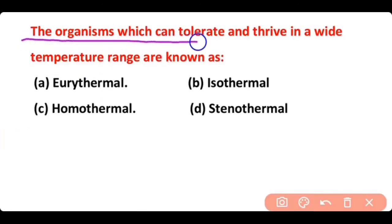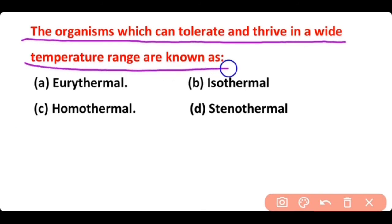The organisms which can tolerate and thrive in a wide range of temperature are known as: eurythermal, isothermal, homothermal, or stenothermal. The correct answer is option A. Eurythermal are the organisms that can tolerate a wide range of temperature.